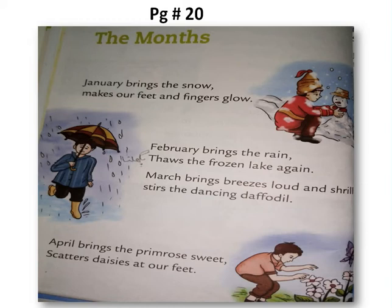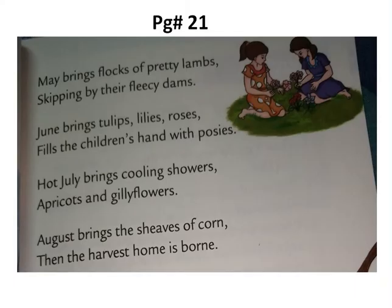Now we will move on to page number 21 for the next four couplets. May brings flocks of pretty lambs, skipping by their fleecy dams. June brings tulips, lilies, roses, fills the children's hands with posies. Hot July brings cooling showers, apricots and gilly flowers. August brings the sheaves of corn, then the harvest home is born.